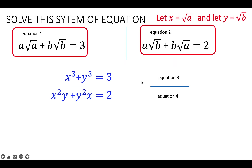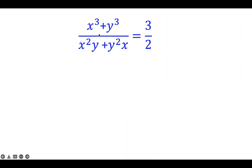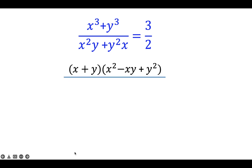Let's divide equations 3 and 4. The result has numerator X cubed plus Y cubed, and denominator X squared Y plus Y squared X, equal to 3 over 2. X cubed plus Y cubed can be factored as (X plus Y)(X squared minus XY plus Y squared). For the denominator, there is a common factor of XY, so we factor out XY to get XY times (X plus Y), equal to 3 halves.